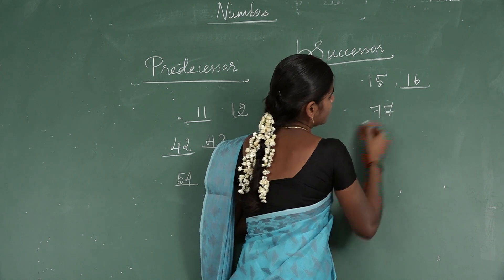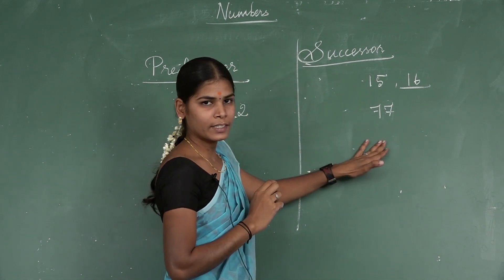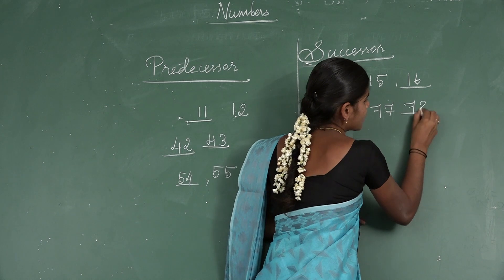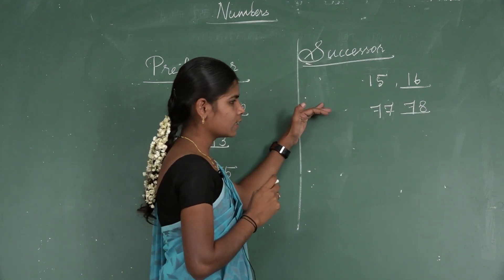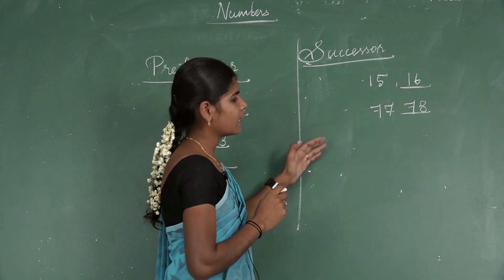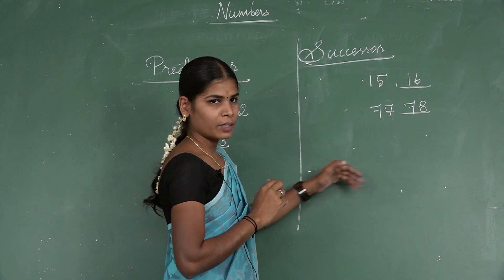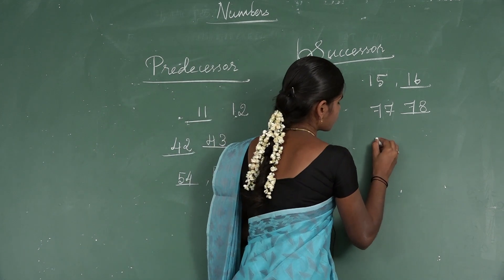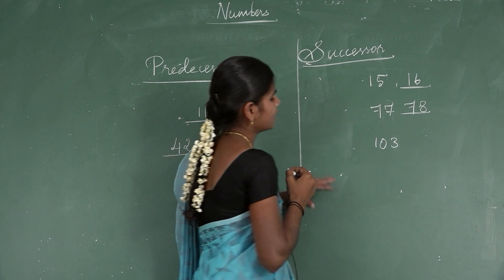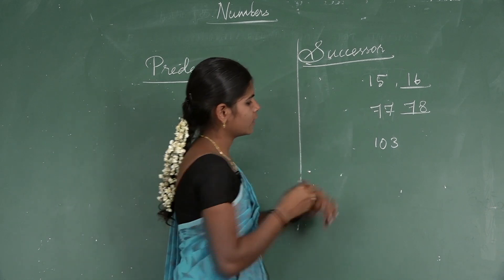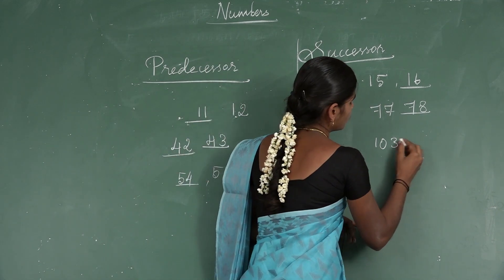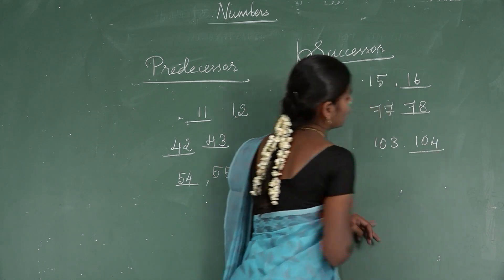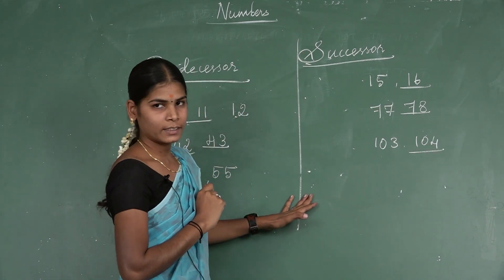Next example — 77. What is the successor of 77? Just after 77 is 78. So 78 is the successor of 77. Next example — 103. What is the successor of 103? Just after 103 is 104. So 104 is the successor of 103.